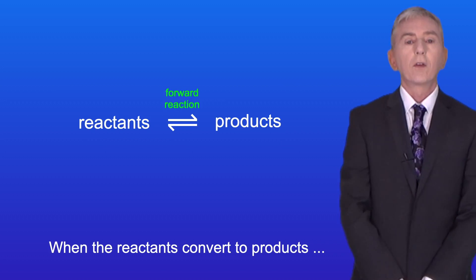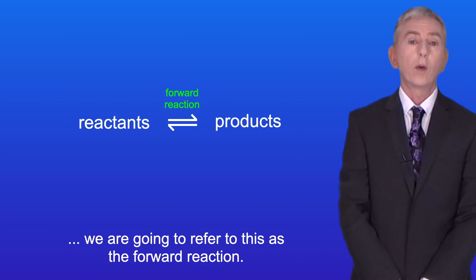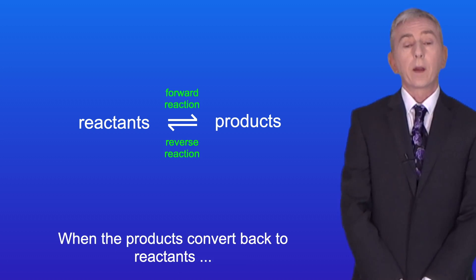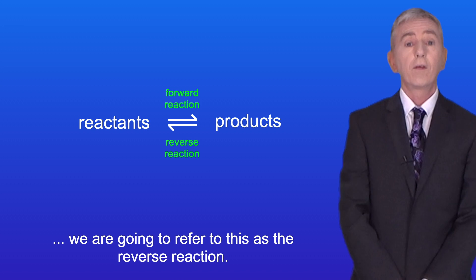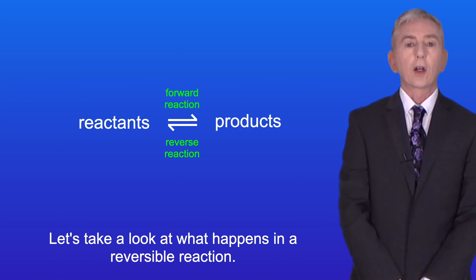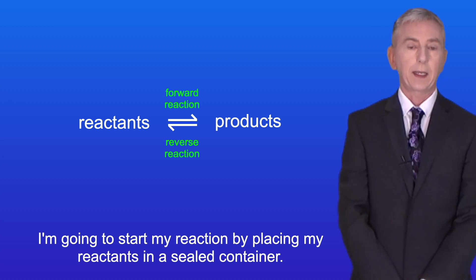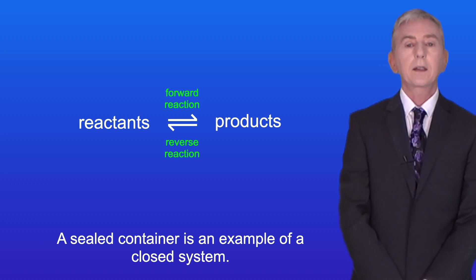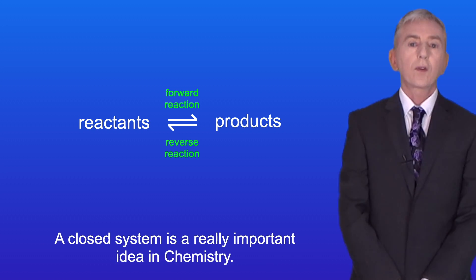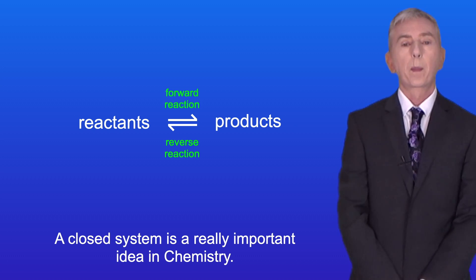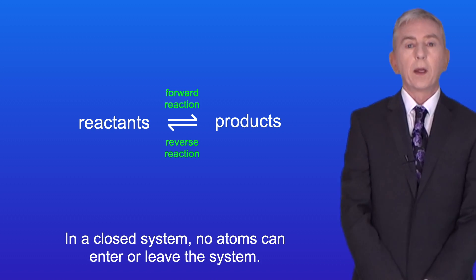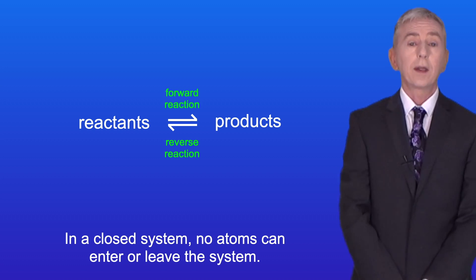When the reactants convert to products, we refer to this as the forward reaction. When the products convert back to reactants, we refer to this as the reverse reaction. I'm going to start the reaction by placing the reactants in a sealed container. A sealed container is an example of a closed system, which is a really important idea in chemistry. In a closed system, no atoms can enter or leave the system.